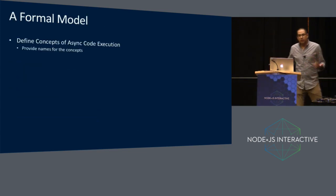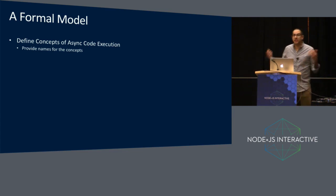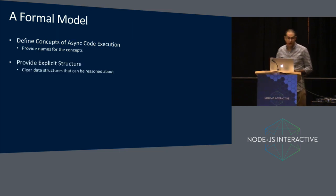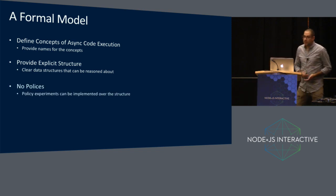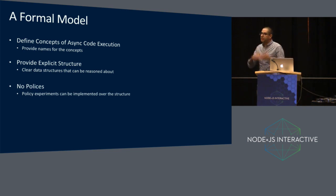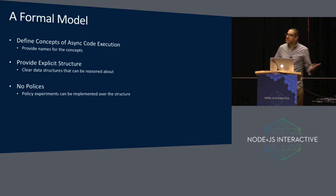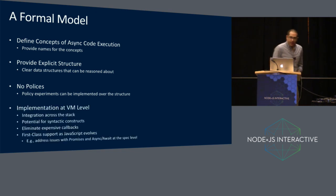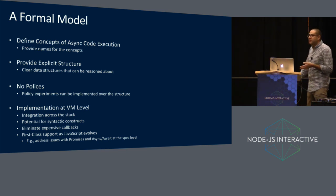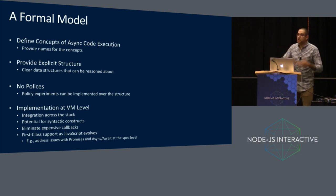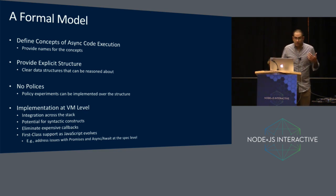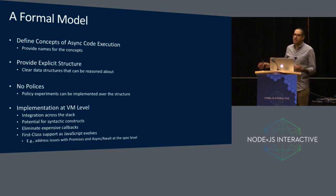A formal model — what does it look like? We want to define the concepts of asynchronous code execution and give names to those concepts. We want to provide explicit structure — clear data structures that people can reason about and have conversations about. We don't want to do any policy; we want to give people data structures and let people argue about what the right policy is. For example, if you wanted to do exception propagation across asynchronous boundaries, people can use this data structure to talk about that. And we're looking at how to implement it across the full stack starting at the VM level — for potential syntactic constructs, eliminating expensive callbacks, and first-class support for asynchronous context as the language evolves.